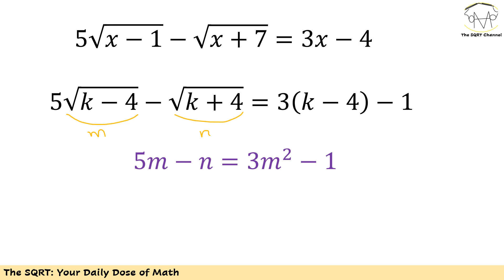What's wrong here? Why did I change an equation with just one variable into an equation with two variables? The key insight is that while m and n appear to be independent variables, they are not independent at all — m is defined based on k and n is also defined based on k, so they are dependent.